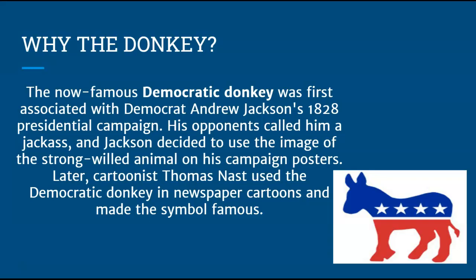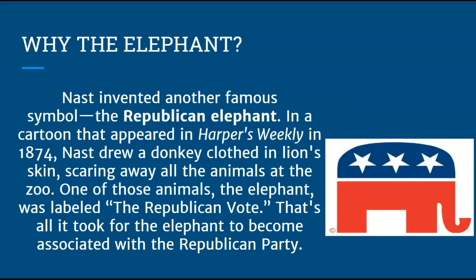You might be wondering why there are animals that represent the parties. The Democratic donkey was first associated with Andrew Jackson. One of his opponents in his 1828 campaign called him a jackass, and Jackson decided that a jackass — which is a donkey — is a strong-willed animal, so I'm a strong-willed person. He decided to use the donkey on his campaign posters, and then it came to represent the Democratic Party through the cartoonist Thomas Nast. The elephant was also made famous by Thomas Nast in a political cartoon he drew. He drew a bunch of animals including a donkey in a lion's skin, and one of those animals was an elephant labeled 'the Republican vote.' From then on, people associated the elephant with the Republican Party.